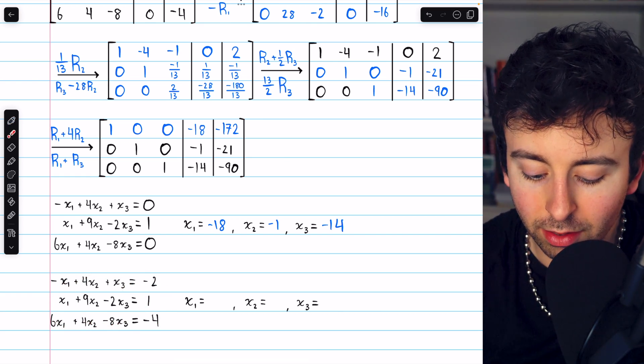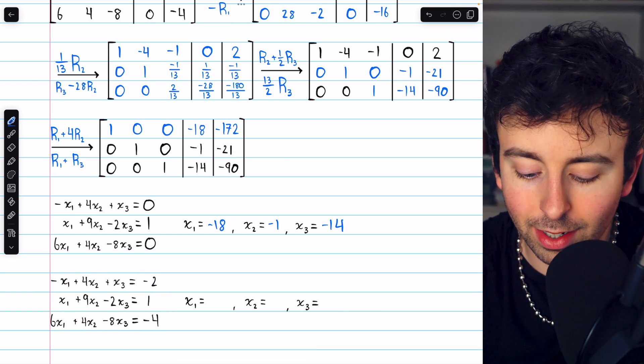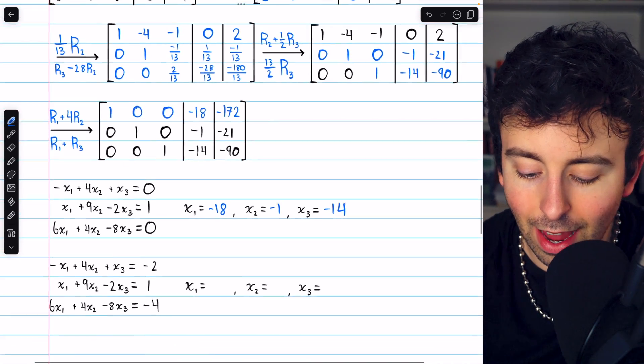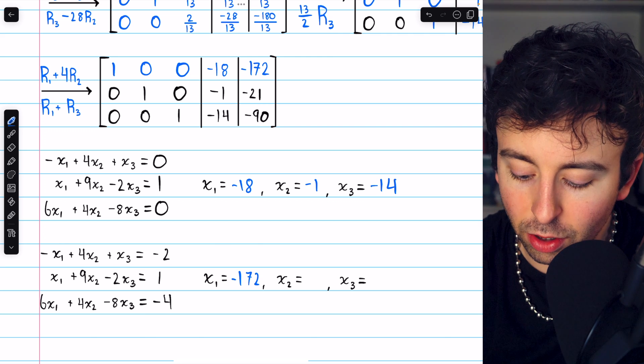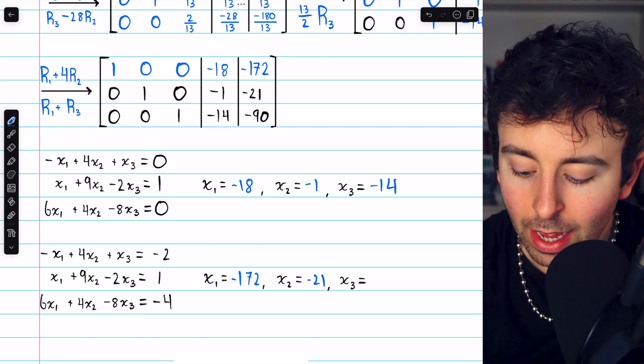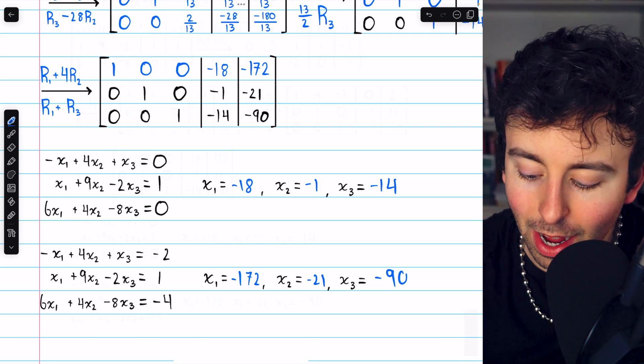For the second system of equations, we look at the second column of constants and see the solution is x1 equals negative 172, x2 equals negative 21, and x3 equals negative 90.